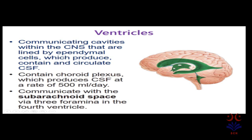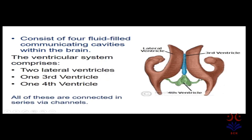In this picture we see the green area which shows different ventricles of the brain: the lateral ventricle, the third ventricle, and the 4th ventricle. The ventricle system comprises two lateral ventricles — right and left — one third ventricle in between them, and posteriorly and inferiorly the 4th ventricle. All of these are connected in series via channels, so all ventricles are interconnected.